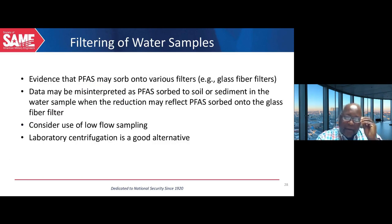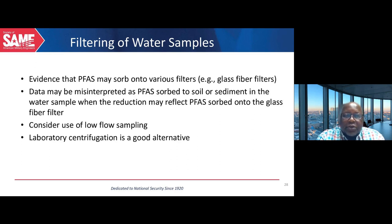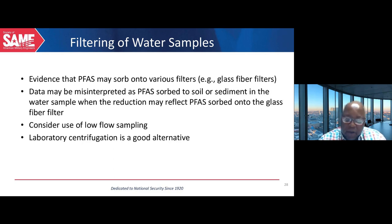One challenge is filtering samples in the field. If you can avoid it, don't filter — send it to the lab and let the lab filter it. But if it is absolutely necessary, make sure the filter you are using has been tested by the lab before use. Consider using low-flow sampling, which may reduce turbidity to the point that filtering is not needed. If you must filter, let the lab be your first choice to do the filtration, and if you cannot, make sure all filters and filtration materials are tested before you start.